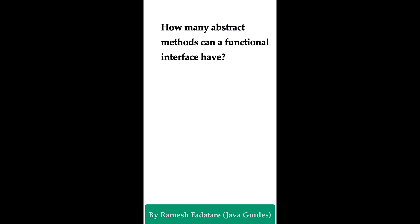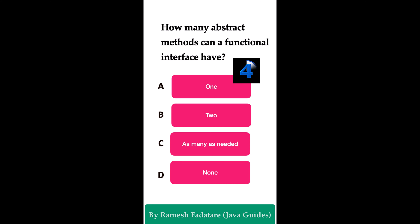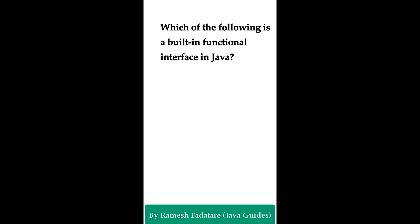How many abstract methods can a functional interface have? Option A: one. Option B: two. Option C: as many as needed. Option D: none. The correct answer is one. A functional interface in Java can have only one abstract method, but it can have any number of default and static methods. Remember: a functional interface has exactly one abstract method, and we use a lambda expression to provide its implementation.